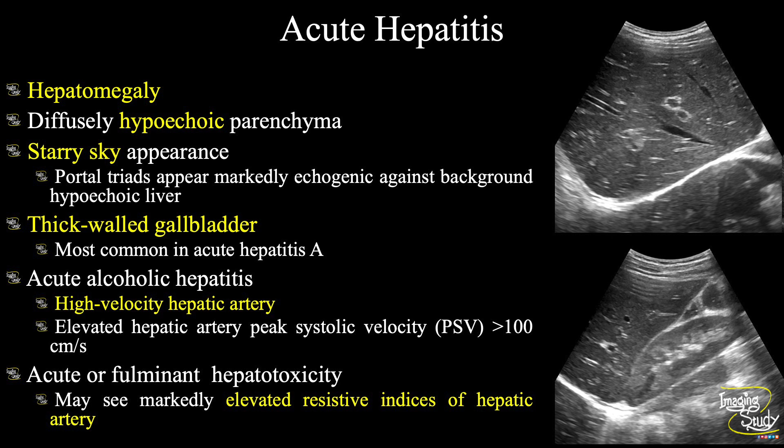Due to the hypoechoic parenchymal echotexture, the portal venous walls will show bright echogenicity, making them look like stars within a dark sky. This pattern is known as the 'starry sky appearance.' Due to adjacent edema, the gallbladder wall will also be thickened — this is very commonly seen in hepatitis A virus infection.